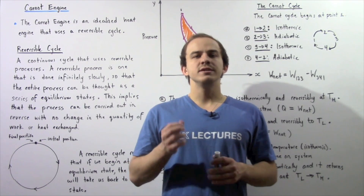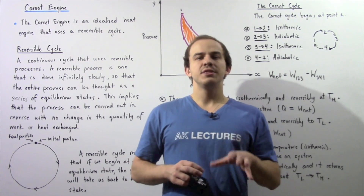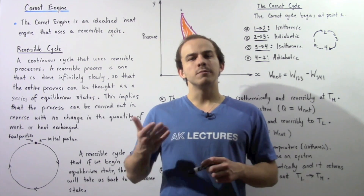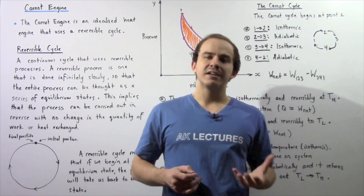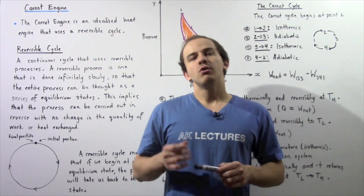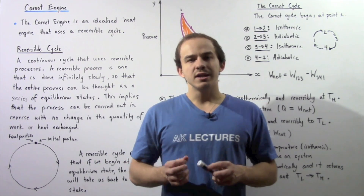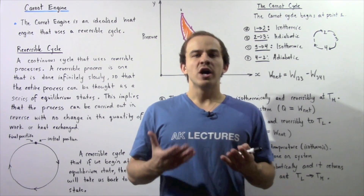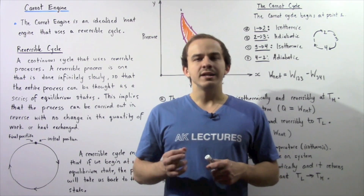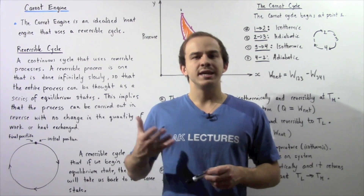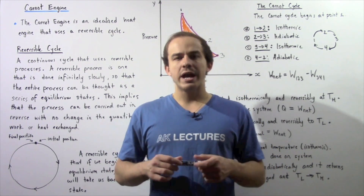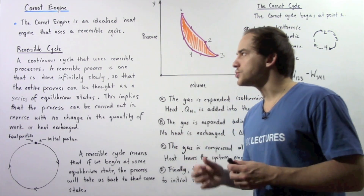In the previous few lectures we discussed the heat engine, which is essentially a device that allows us to transform thermal energy into mechanical energy — it allows us to transform heat into work. In the same way that we study the ideal gas to help us explain and understand the way that real gases behave, we study an ideal version of the heat engine known as the Carnot engine to help us understand the way the heat engine actually functions.